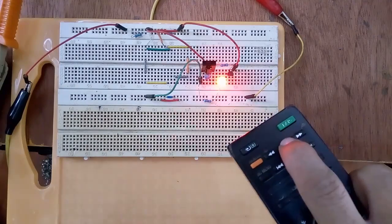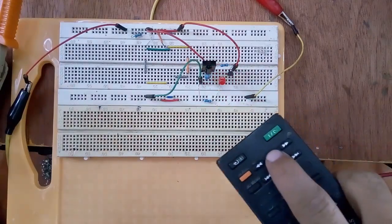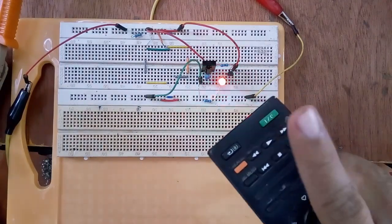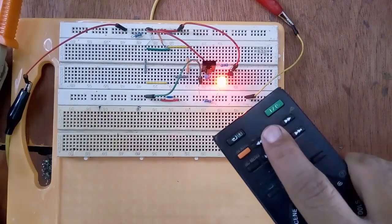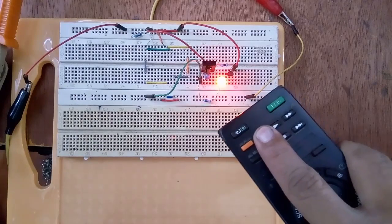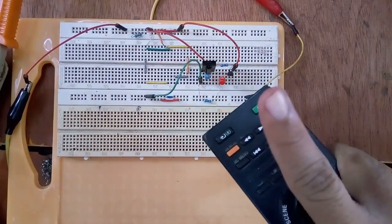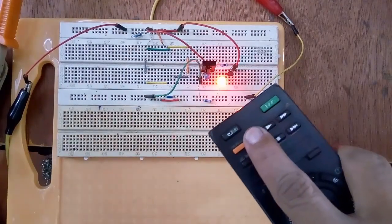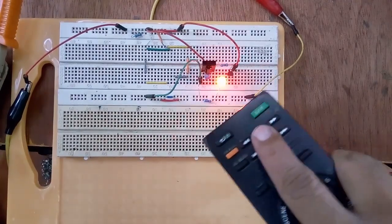You can see the LED is glowing simply because the IR receiver received the signal that causes the LED to glow. As you can see, when I press the button switch the LED is glowing, but when I release my finger the LED is off.